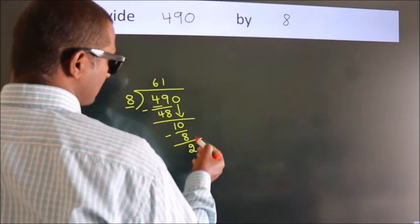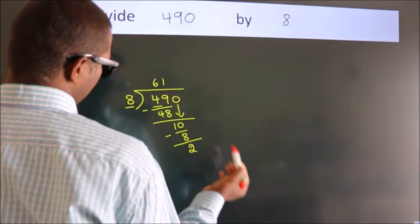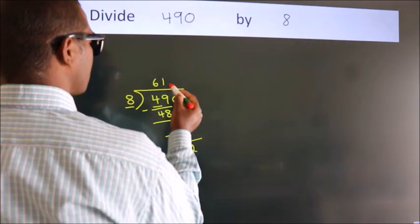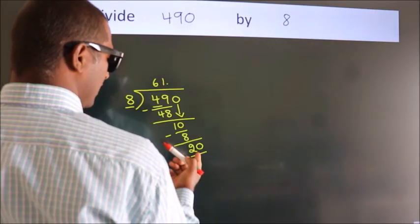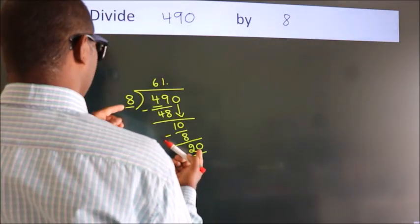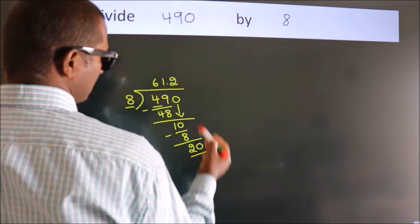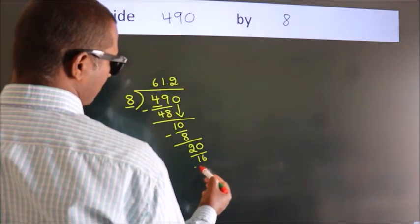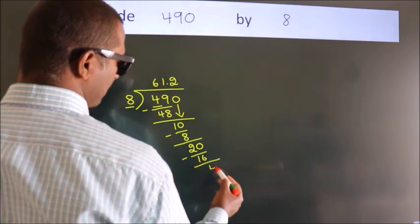After this, no more numbers to bring it down. So what we do is we put dot, take 0. So 20. A number close to 20 in 8 table is 8, 2, 16. Now we subtract. We get 4.